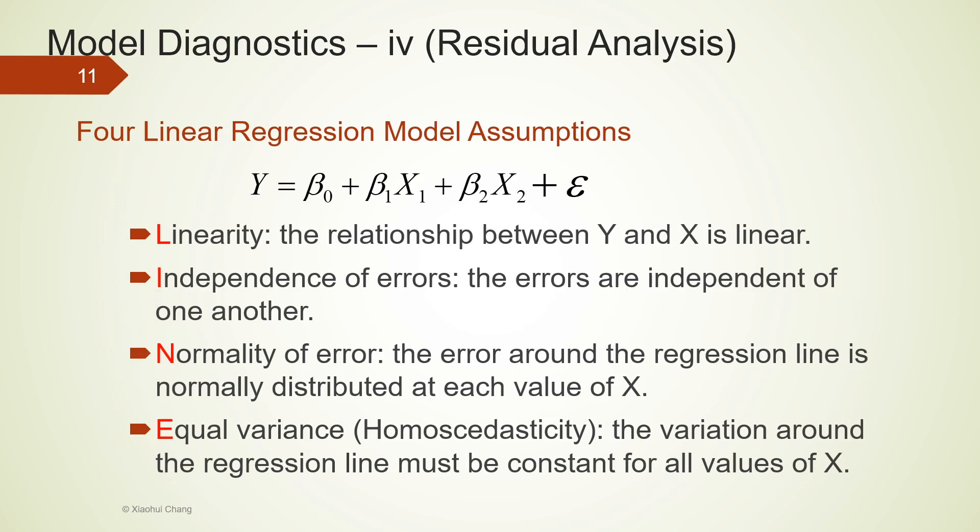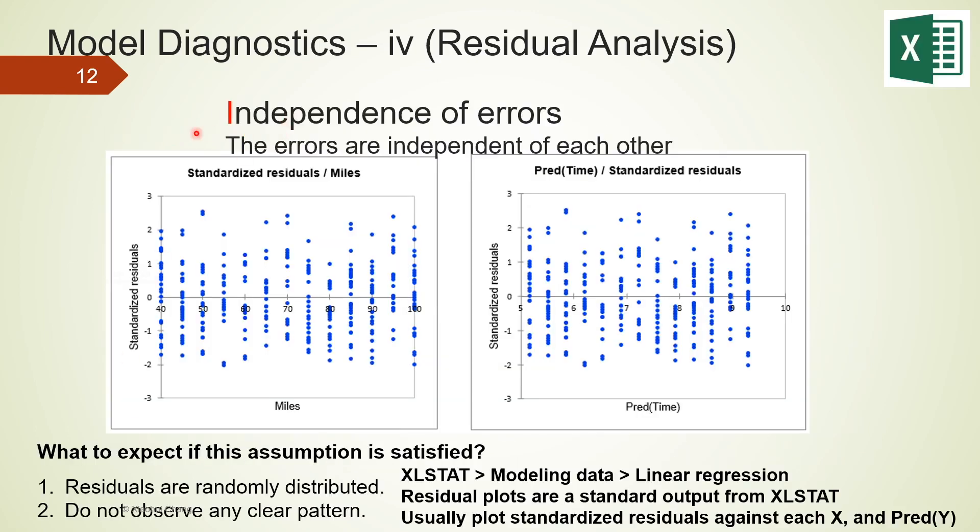Let's take a look at the independence of errors assumption. For this assumption, we will assume the errors are independent of each other. So first, we will have to produce residual plots. The residual plots can be easily produced using XLSTAT or other software. In XLSTAT, modeling data, linear regression. Residual plots are standard output from XLSTAT whenever we run linear regression. What to expect if this assumption is satisfied? If errors are indeed independent of each other, the residuals should look randomly distributed, and we do not observe any clear pattern in these residual plots. From these residual plots here, we do not observe any clear pattern. Thus, it looks like the independence assumption is valid here.